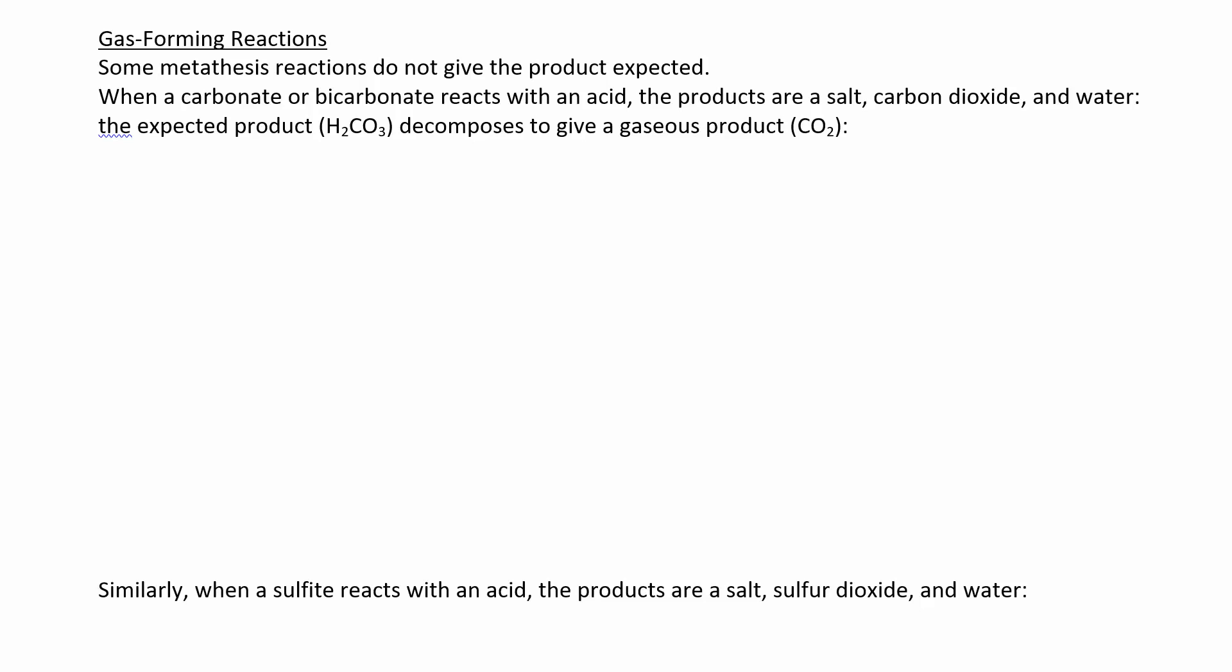Suppose you had something like calcium carbonate. That's a solid and you dropped a little bit of acid on there. Maybe some HCl. What would you expect to happen? So you would have calcium here. Calcium has a plus two ion and carbonate is CO3 2 minus, H plus and Cl minus.